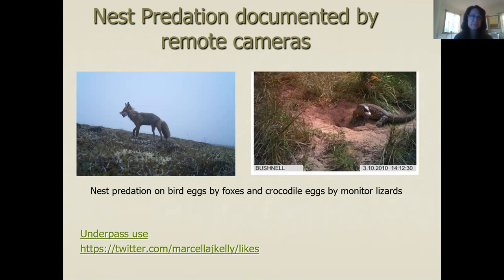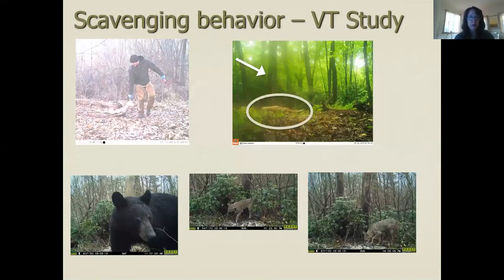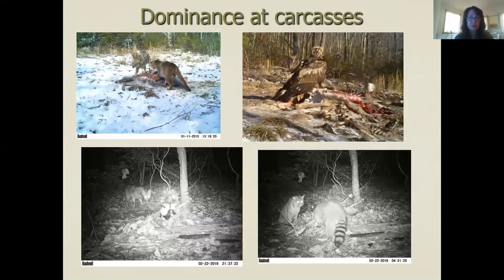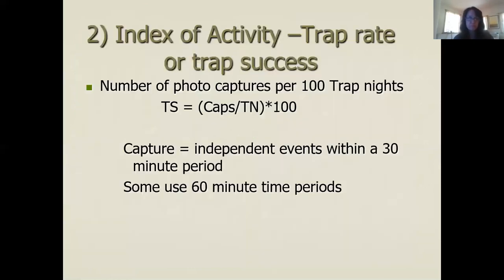We have examples of nest predation by foxes and by crocodiles on eggs, and video camera data for underpasses to see if animals are using them. Another Virginia Tech study is examining scavenging behavior by setting remote cameras on roadkill deer carcasses to examine scavenging levels for black bears, bobcats, and coyotes — and whether there's a dominance hierarchy. We've captured bobcats and coyotes facing off over a carcass, golden eagles, coyotes with skunks, and bobcats with raccoons.